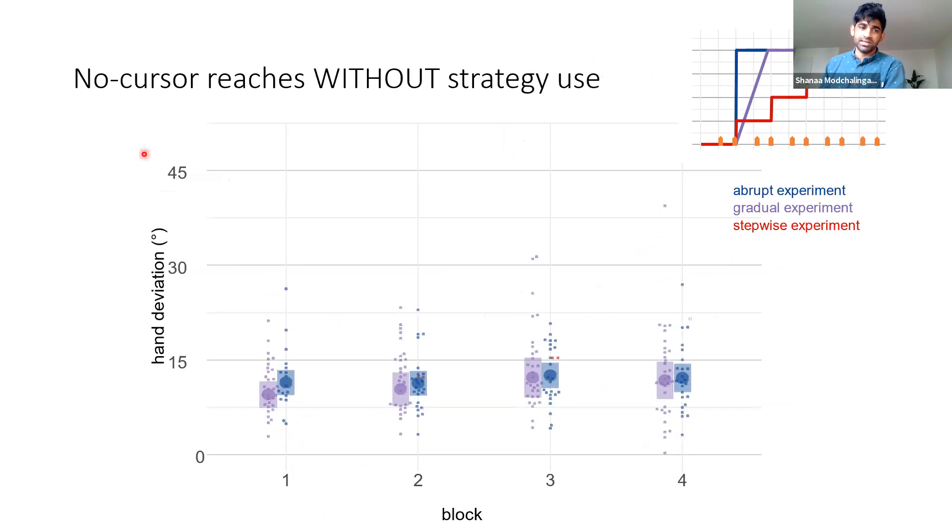So now let's look at the implicit learning. Again, these are these no cursor reaches when we tell people not to use any cognitive strategies. Surprisingly we see that with both gradual and abrupt rotation paradigms people don't go above the 15 degree-ish limit that I mentioned before. In blocks one, two, three, and four, by the time we measure these implicit after-effects people have adapted to a full 60 degree rotation. But again implicit learning is still at the 15 degree mark. However, when we look at this stepwise rotation we clearly see that by the time people adapt to a full 60 degree rotation they do show higher levels of implicit learning.